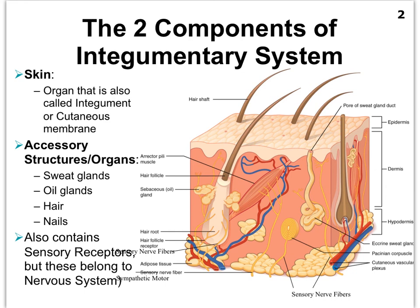In addition, we find distributed throughout the integumentary system various components of the nervous system. All these yellow structures here — typically anatomy and physiology books draw parts of the nervous system in yellow. Many of those are various types of sensory receptors that we will learn more about later in the chapter, and much more when we get to the end of the semester.